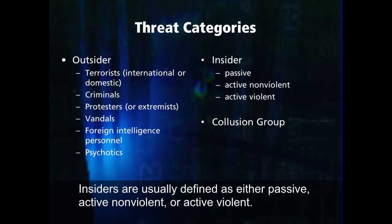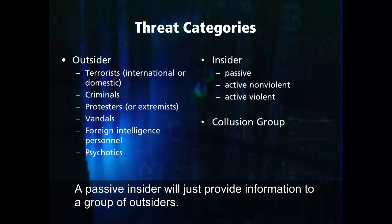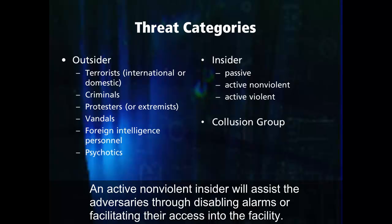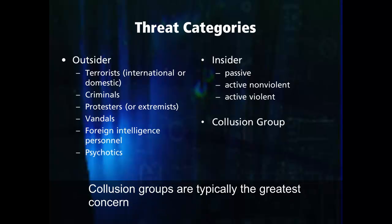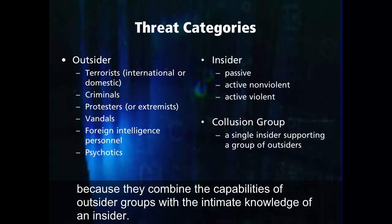Insiders are usually defined as either passive, active nonviolent, or active violent. A passive insider will just provide information to a group of outsiders. An active nonviolent insider will assist the adversaries through disabling alarms or facilitating access into the facility. An active violent insider will participate directly in a violent attack. Collusion groups are typically the greatest concern because they combine the capabilities of outsider groups with the intimate knowledge of an insider.